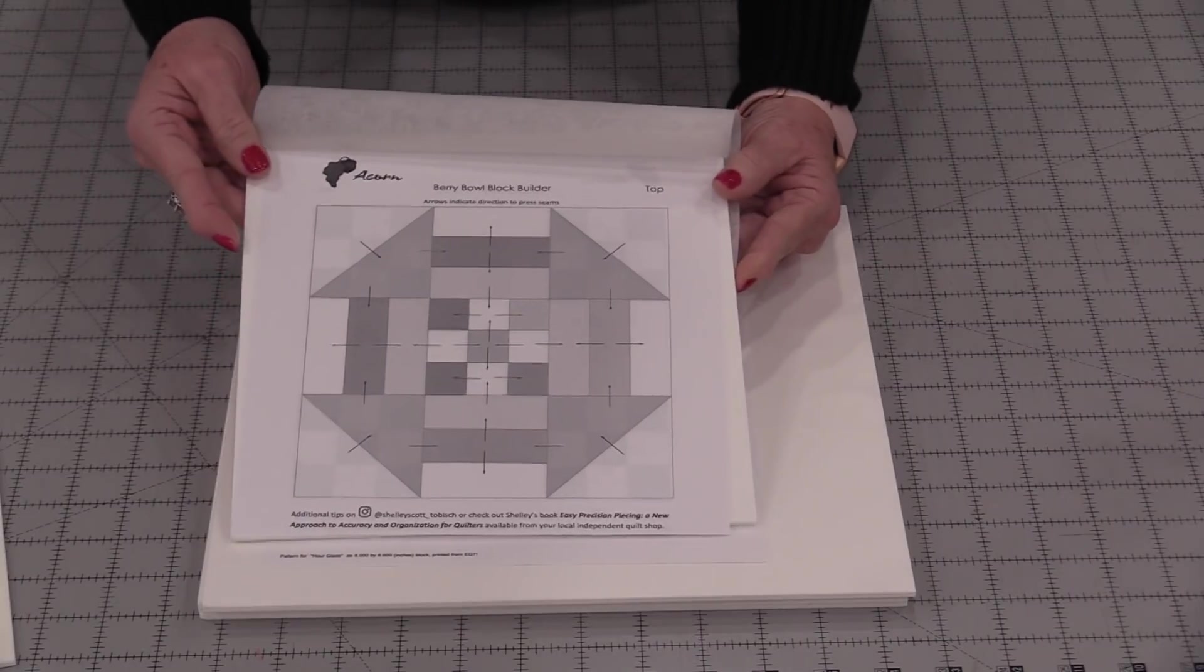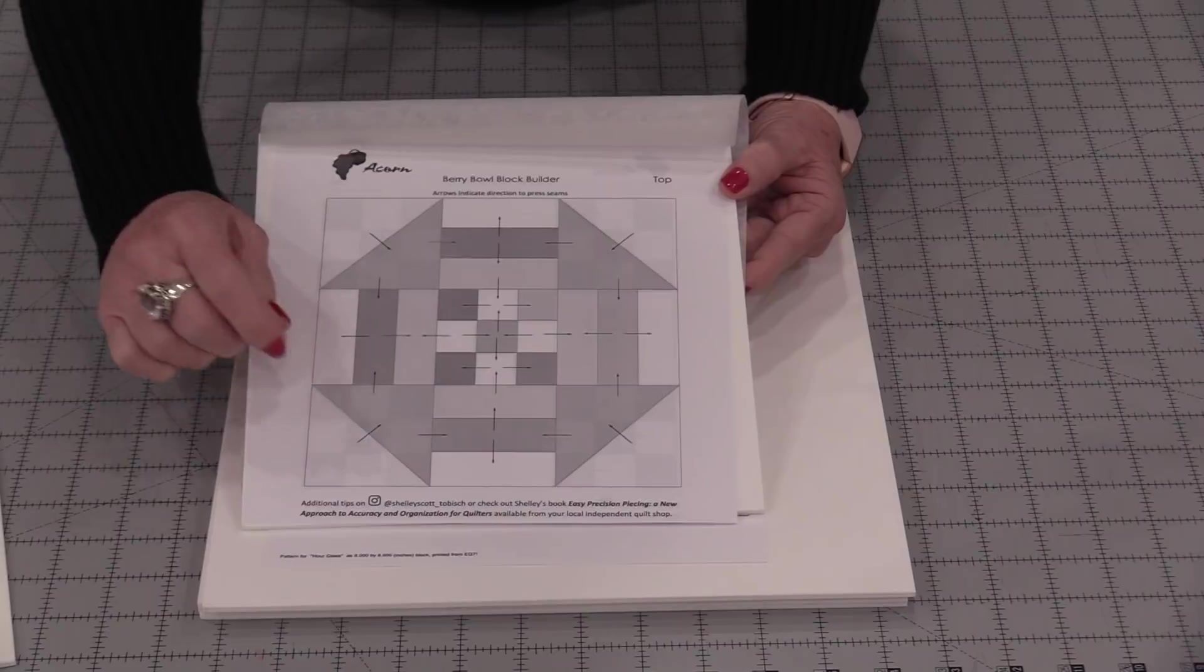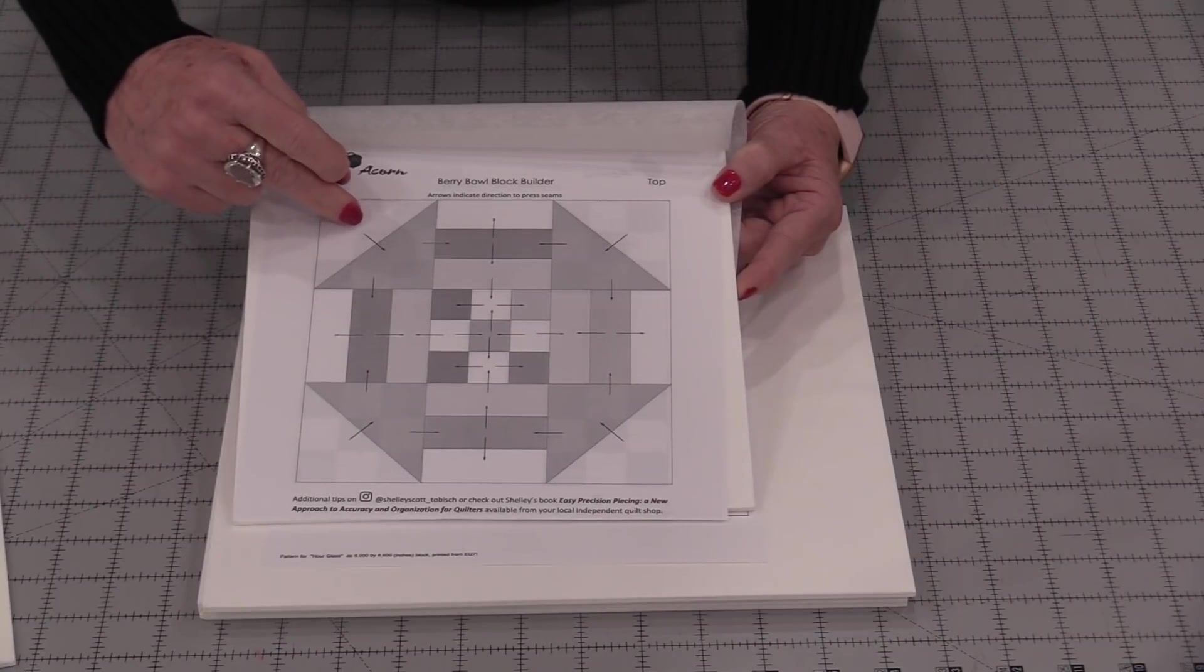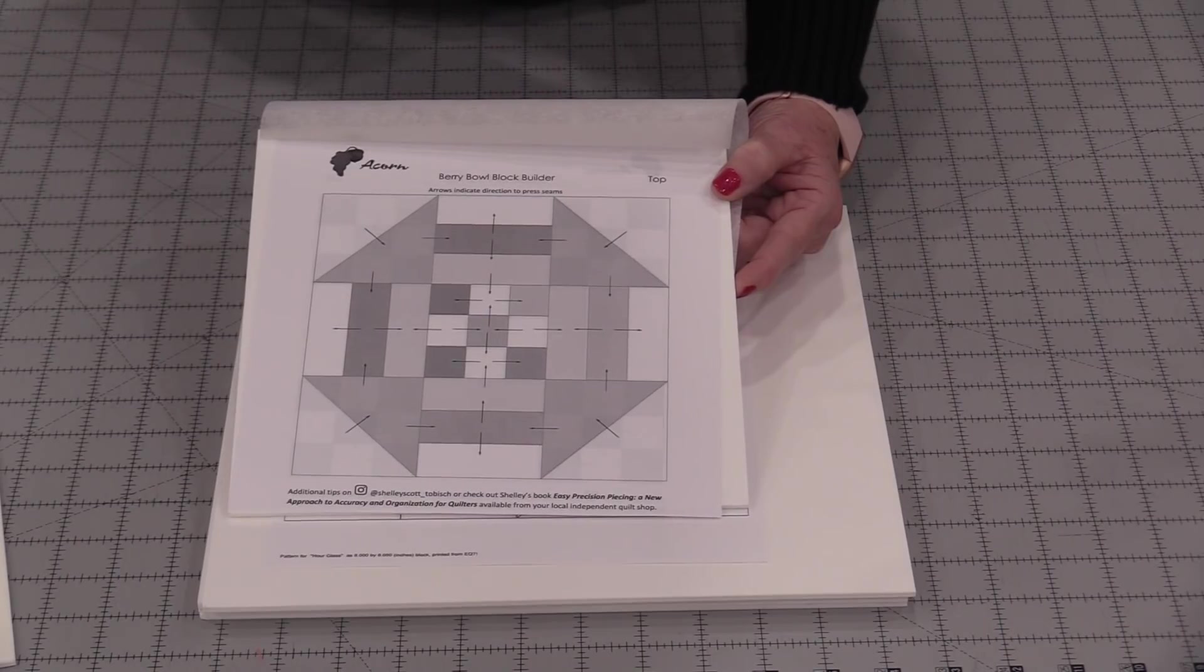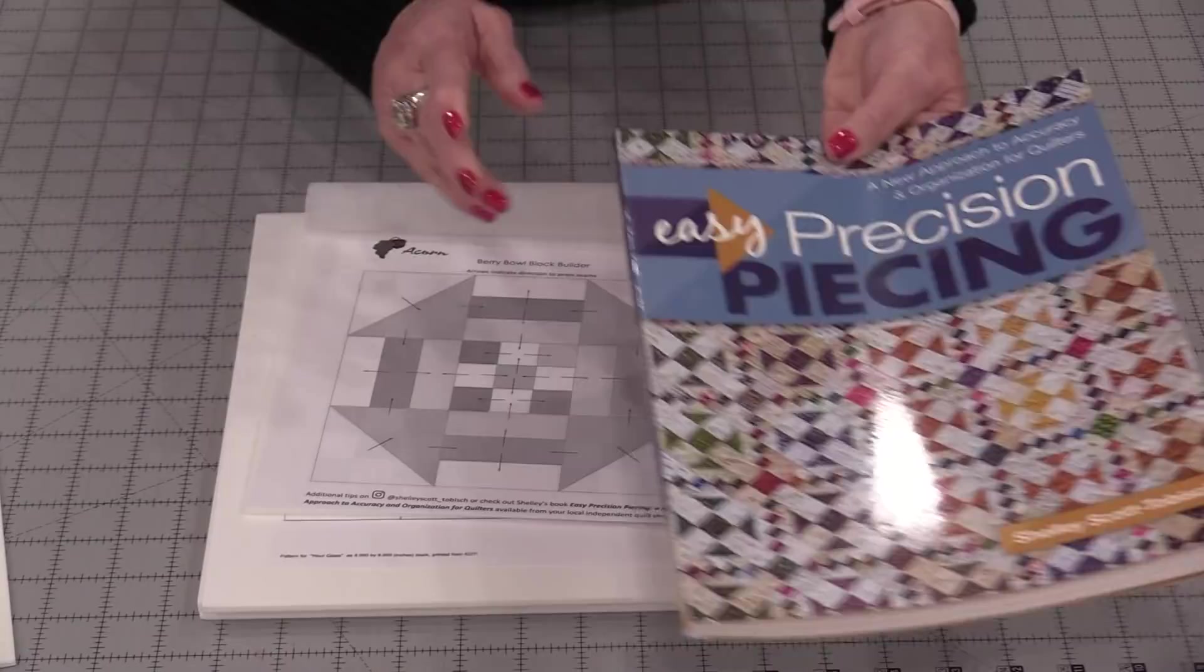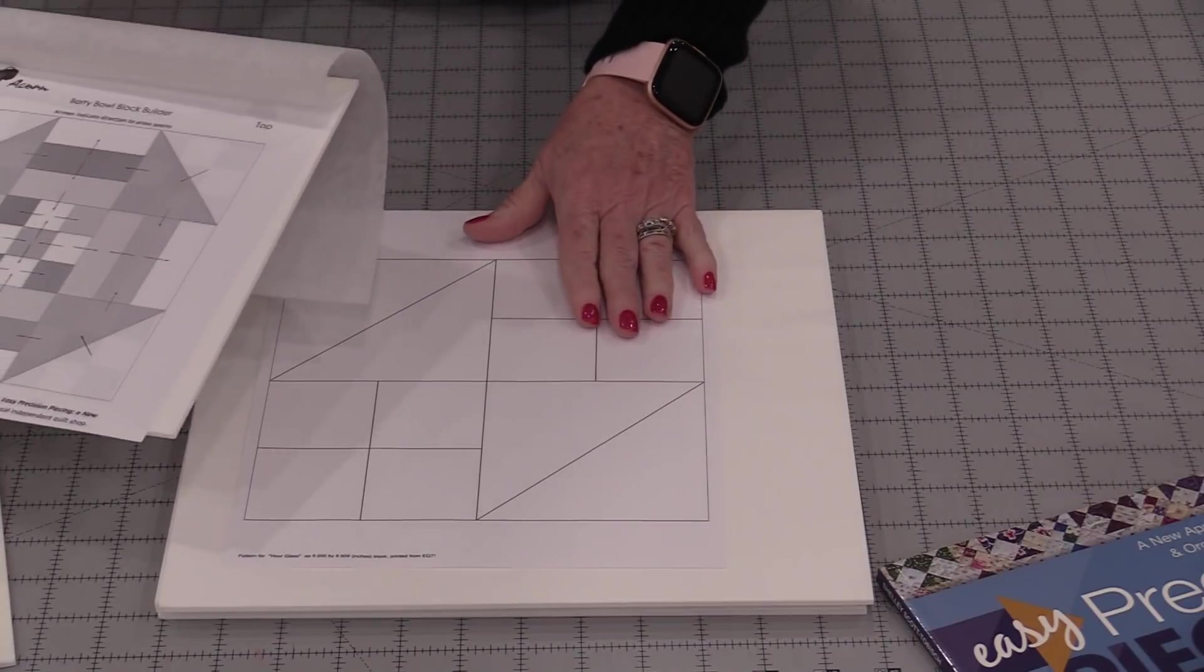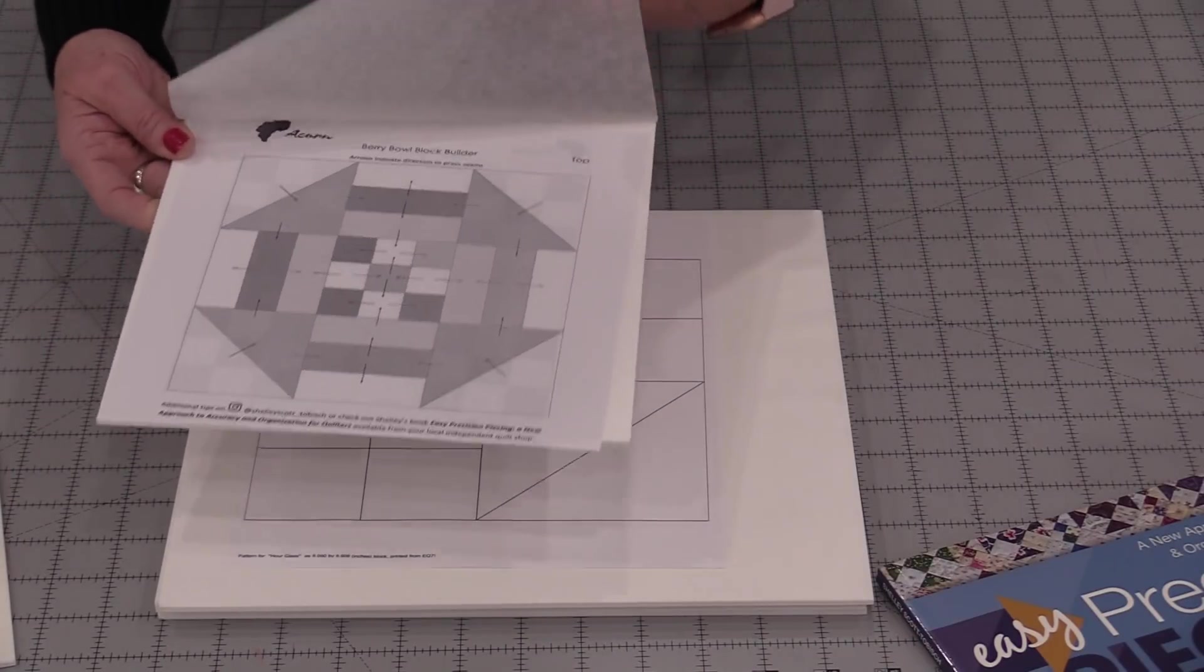As you can see here in the example of this one there are arrows. Those arrows are pressing directions. We have not only the pressing directions for the individual pieces but on how to put those blocks together. If you have the book Easy Precision Piecing there's a lot of great hints and tips on how to use these blocks, but today I'm going to make the one block go through it step-by-step so that we can see how to use these.